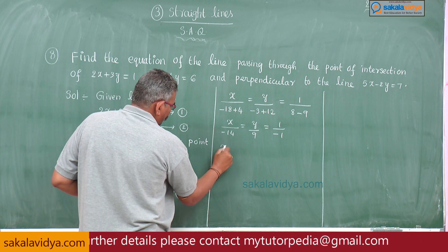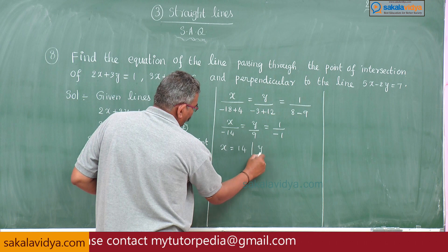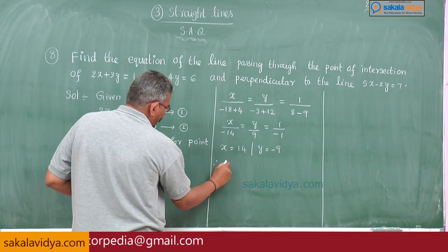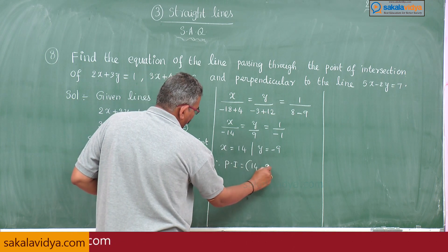x is equal to -14, y is equal to -9. Therefore, point of intersection is equal to 14 comma -9.